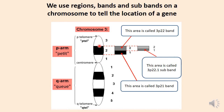These alternating light and dark areas on the chromosomal arms are called the chromosomal regions. They are numbered from the centromere end to the telomeric end. So in the p-arm they go as 3p1, 3p2, and 3p3. In the q-arm they will go as 3q1, 3q2, 3q3, 3q4, and 3q5.